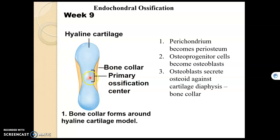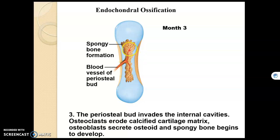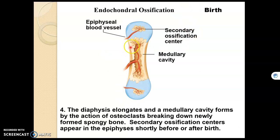We start to get an ossification center as cartilage breaks down. The important point is where ossification begins in endochondral ossification: the primary ossification center is right there in the diaphysis. As we move through the slides, we can see the cartilage starting to break down in the diaphysis and eventually getting replaced by bone. Eventually, the epiphyses also begin to ossify — that would be the secondary ossification center, which happens in each epiphysis.